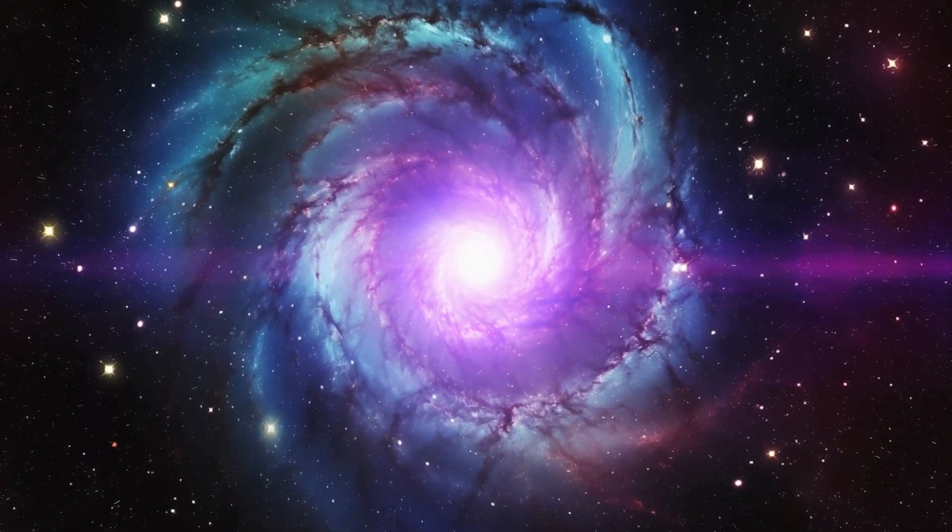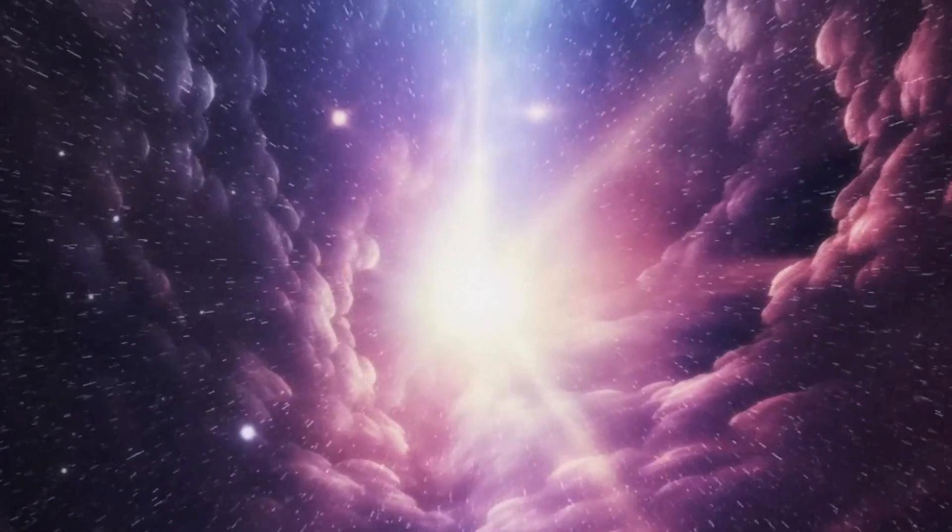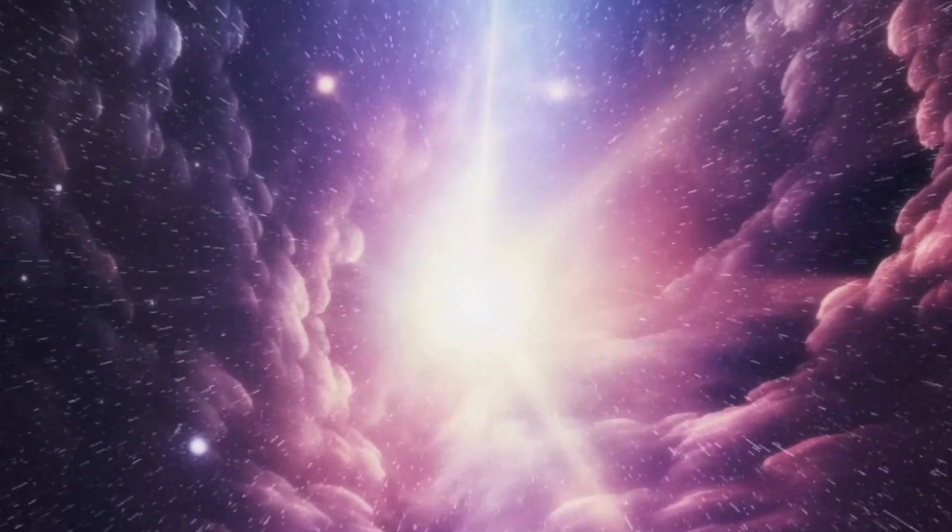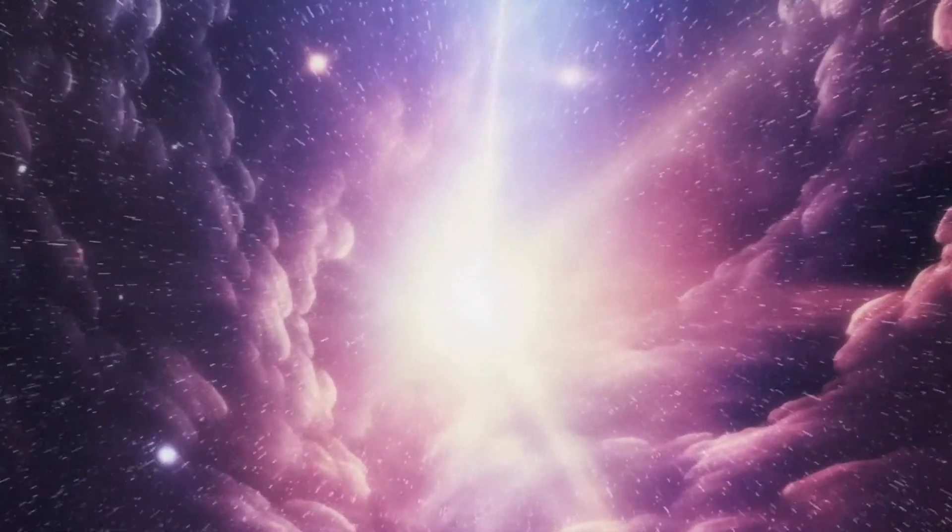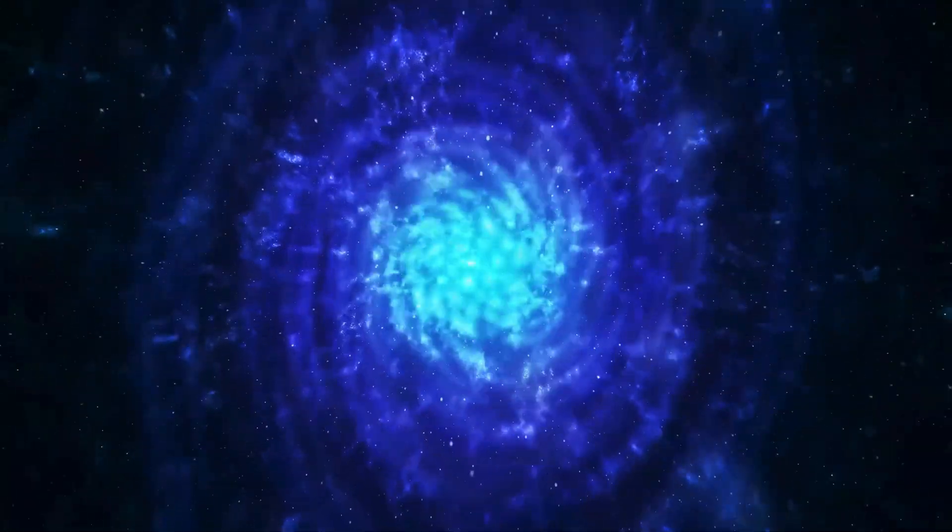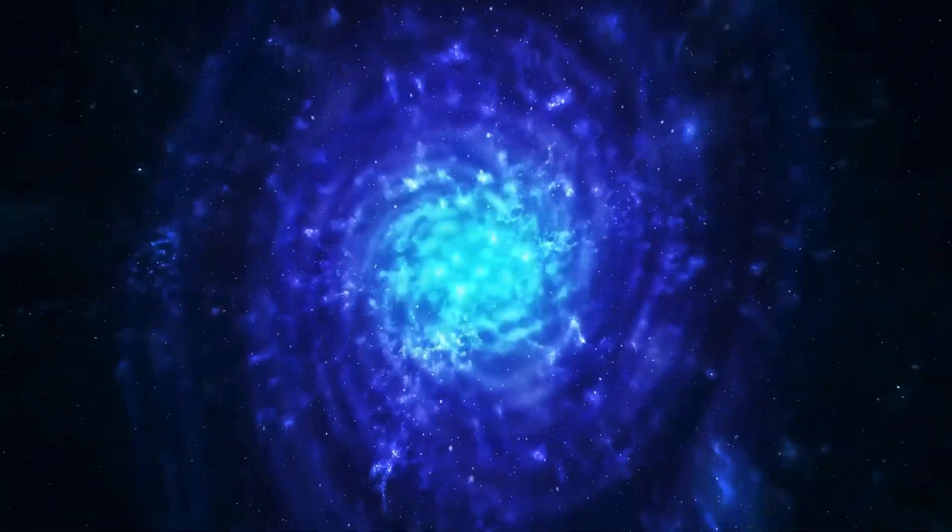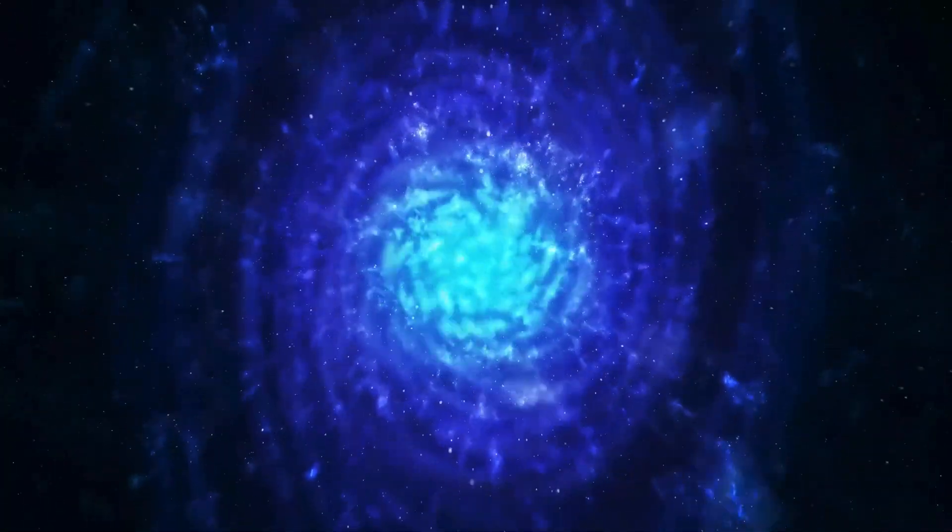This cycle, known as surface mass discharge, spews materials from Betelgeuse's external layers like the sun's coronal mass discharges. Not withstanding varying inward designs and processes, Betelgeuse, at a mere 10 million years of age, is astoundingly youthful contrasted with our sun.